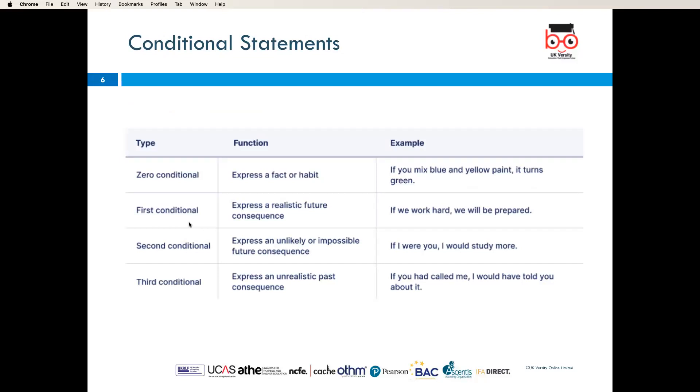What are conditional statements? We have type, function, and example. We have zero conditional, first conditional, second conditional, and third conditional. The zero conditional expresses a fact or habit. An example is: if you mix blue and yellow paint, it turns green. First conditional expresses a realistic future consequence. Example: if you work hard, you will be prepared well.